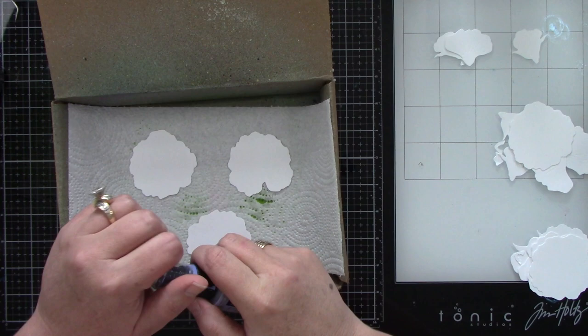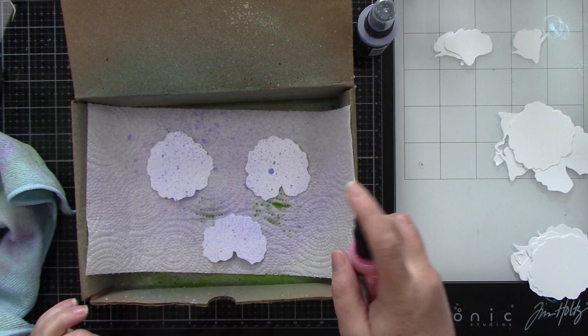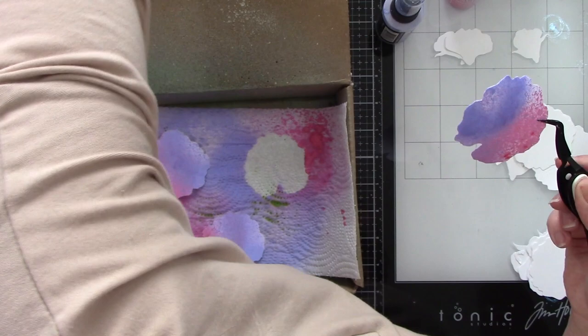So for this first pansy, I am using Shaded Lilac and Picked Raspberry, and I'm going back and forth. Sometimes bringing in a little bit more color once I've sprayed. If I've covered up too much of one color, then I brought in the next color. And as you can see, it is not perfect, which is what I'm loving about this.